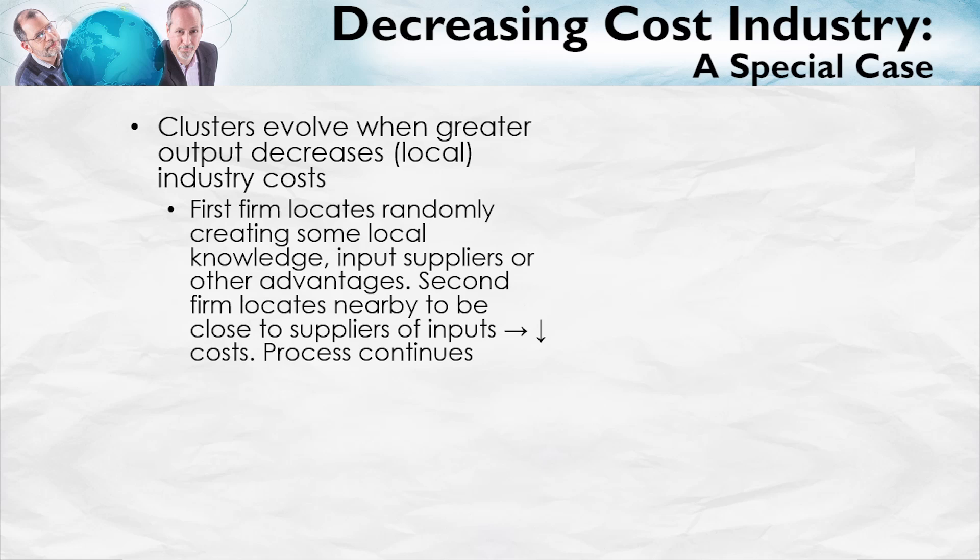Some input suppliers — for the backing of the carpet, for example — also began to locate in Dalton, Georgia. So there were advantages which began to develop in Dalton, Georgia, simply because one firm was there already. A second firm looking around the country and deciding where to locate then chooses Dalton, Georgia, next to the first firm, because that's where the specialized inputs already exist and where workers who already understand the technology can be more easily found. Once the second firm does that, it contributes to the local knowledge, and the third firm also finds that costs are even lower in Dalton, Georgia than elsewhere, and the process continues.